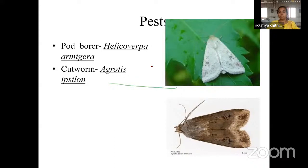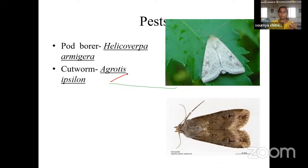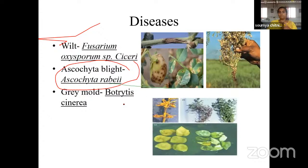Important pests of most pulse crops include pod borer (Helicoverpa) and cutworm (Agrotis). Whiteflies and jassids are also found. An important disease of pigeon pea is sterility mosaic virus, transmitted by the mite Aceria cajani. Wilt is very common in pulse crops. Ascochyta blight is most common in chickpea. Grey mould is also found.